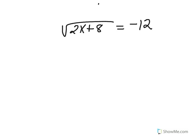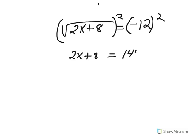Since the radical is already isolated, we are going to square both sides. On the left, we get 2x plus 8. On the right, we get 144.